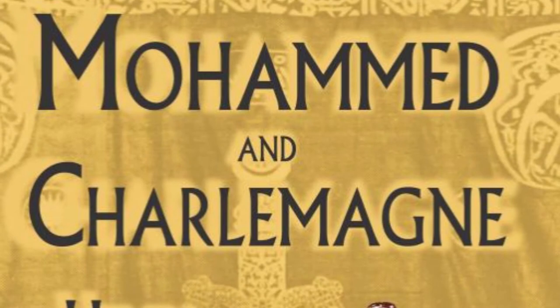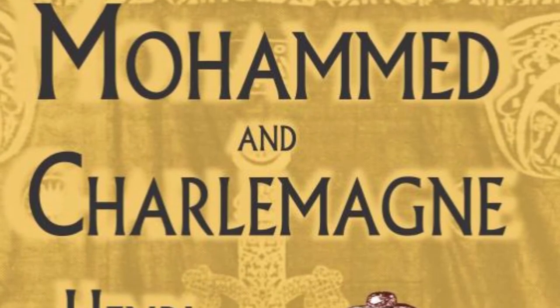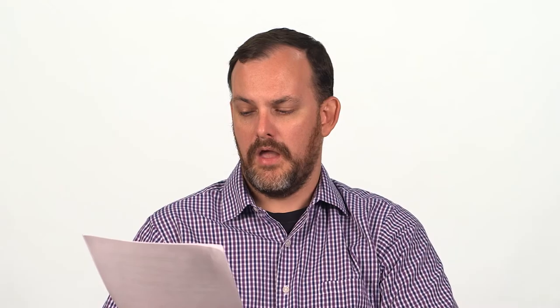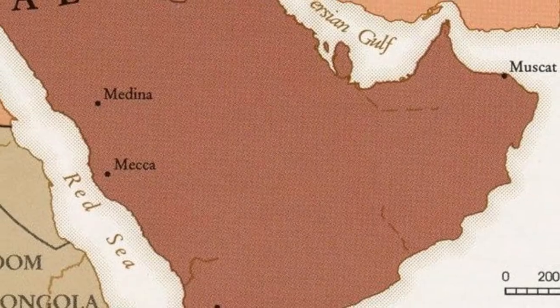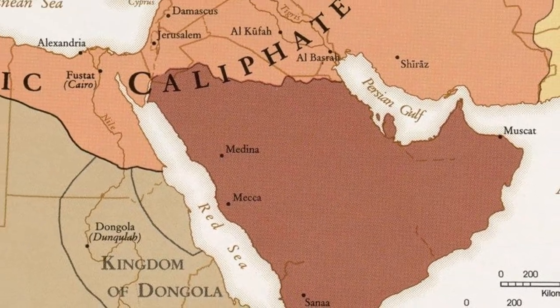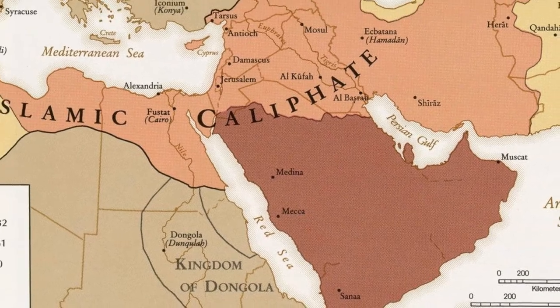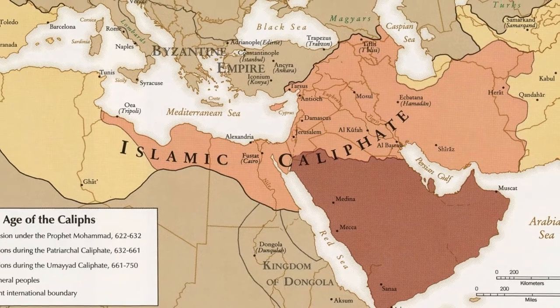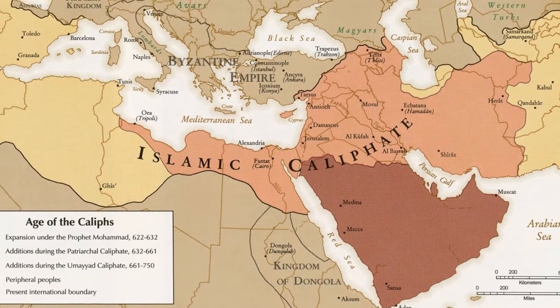However, Pirenne challenged this view in his 1937 book, Muhammad and Charlemagne. Instead, Pirenne argued that what really divided the Mediterranean and in process influenced the development of European civilization was the rise of Islam. In the 100 years after the death of Muhammad in 632 CE, Arab armies conquered a number of lands along the Mediterranean Sea, including Syria, Palestine, Egypt, North Africa, and much of Spain, and even briefly invading France.